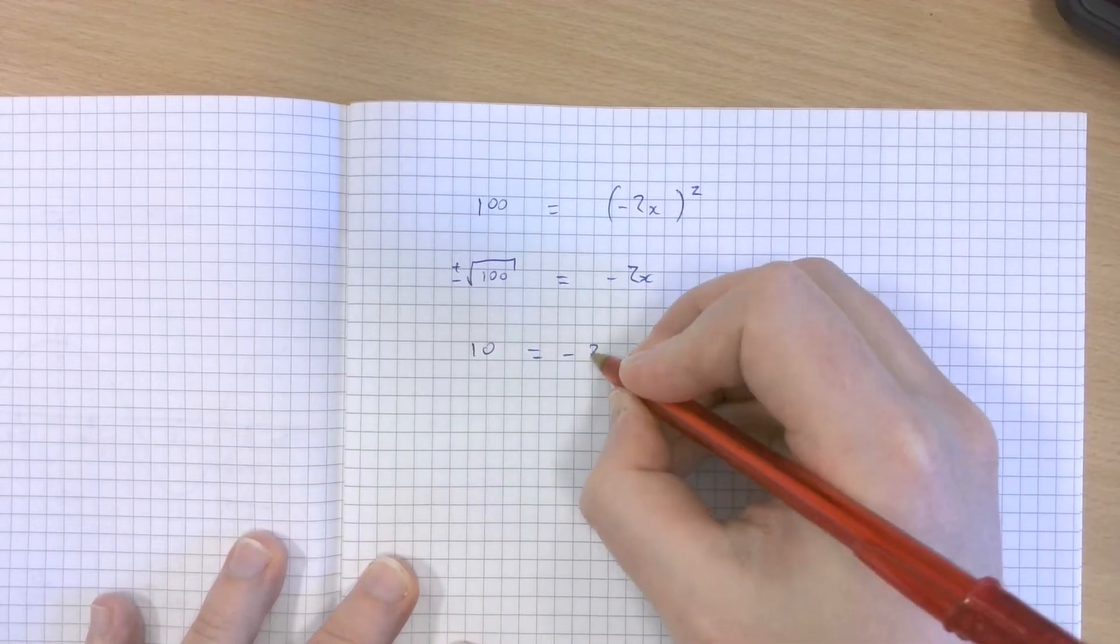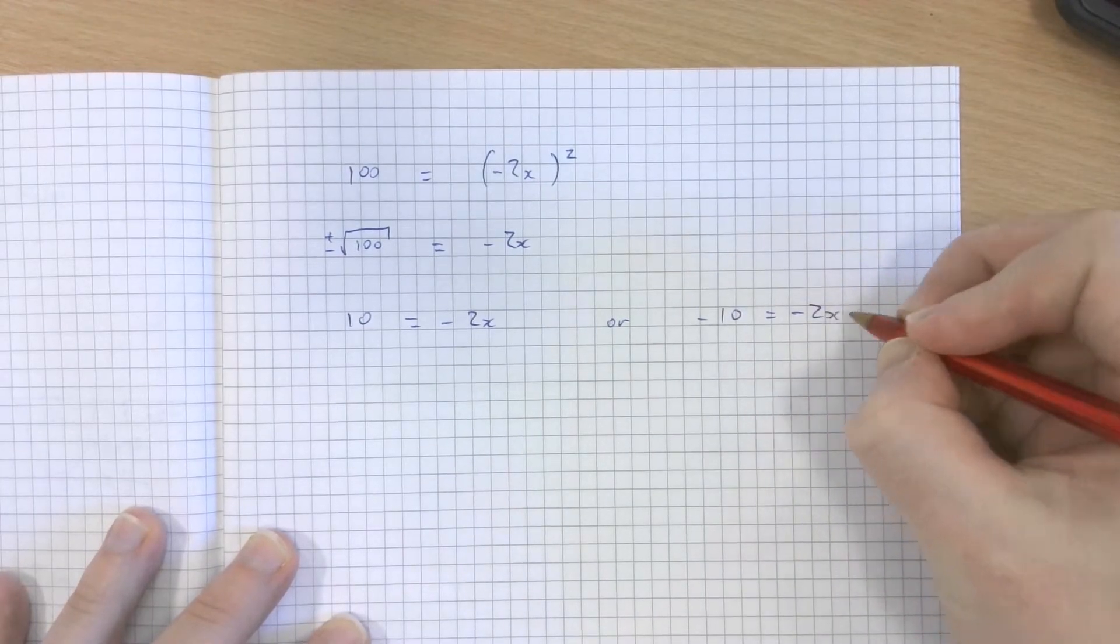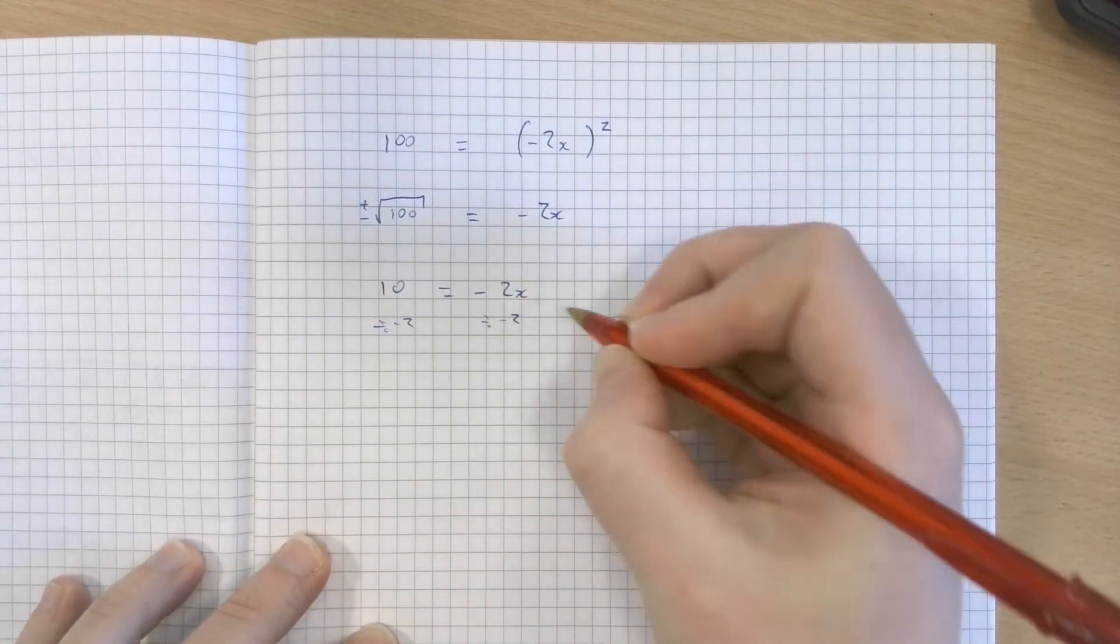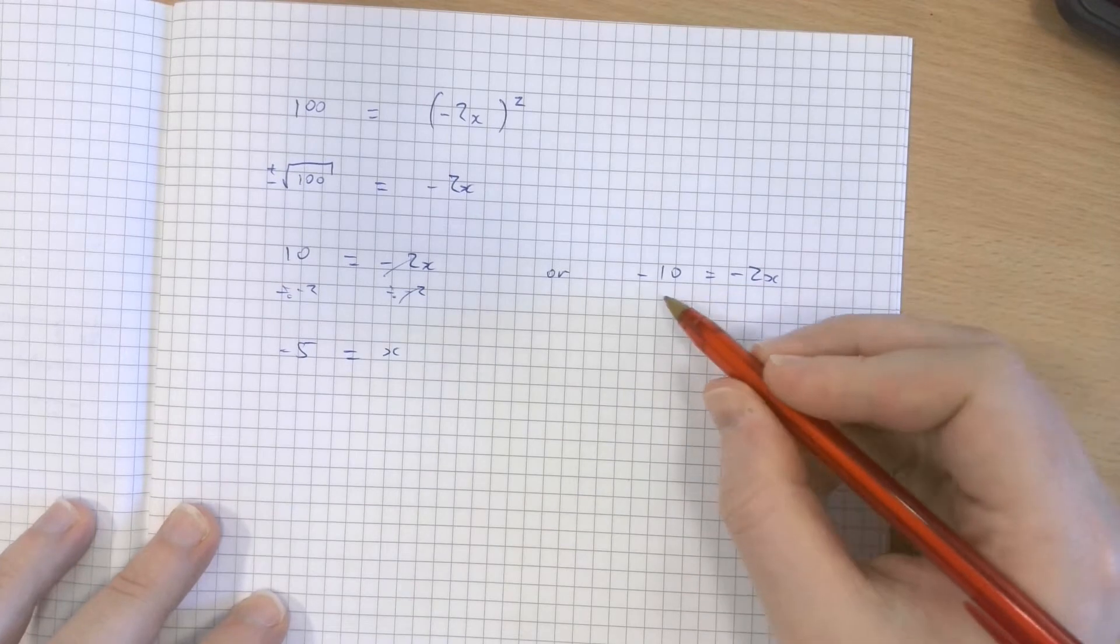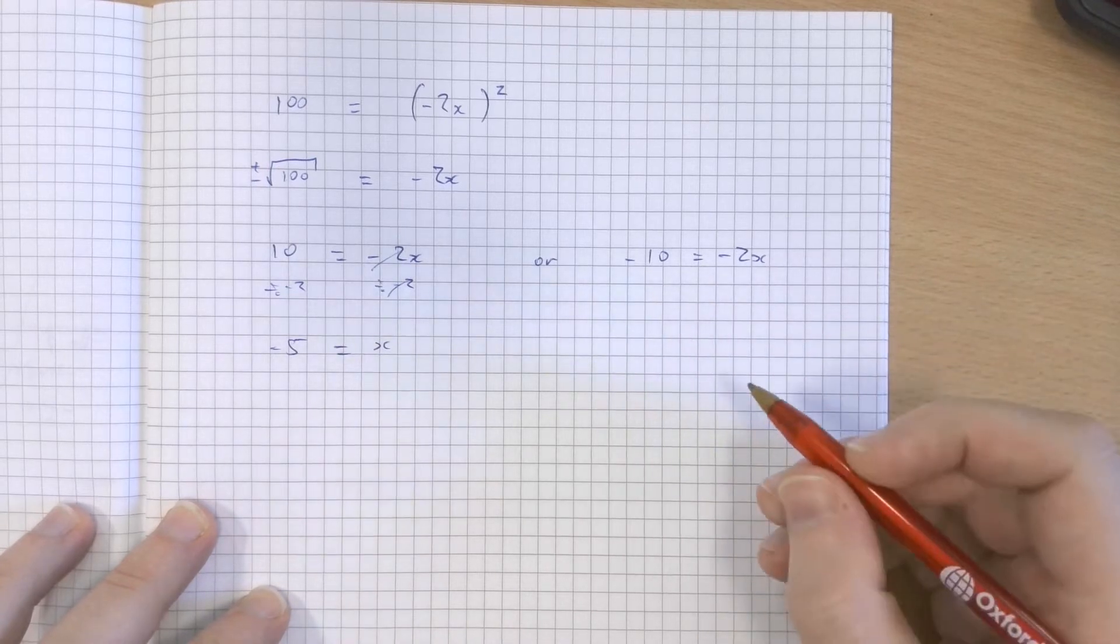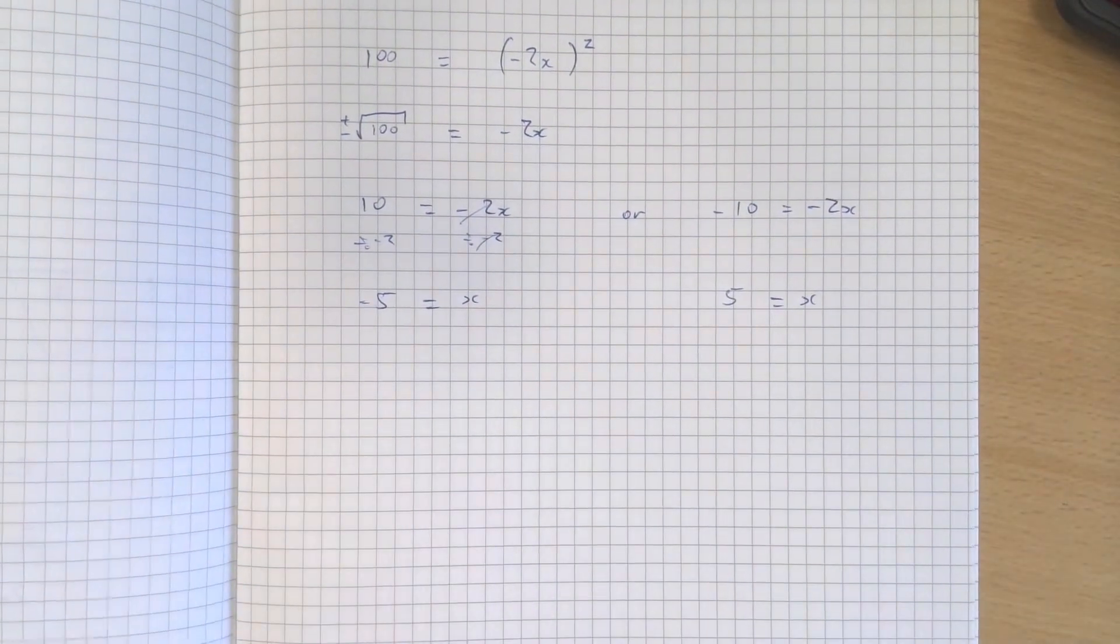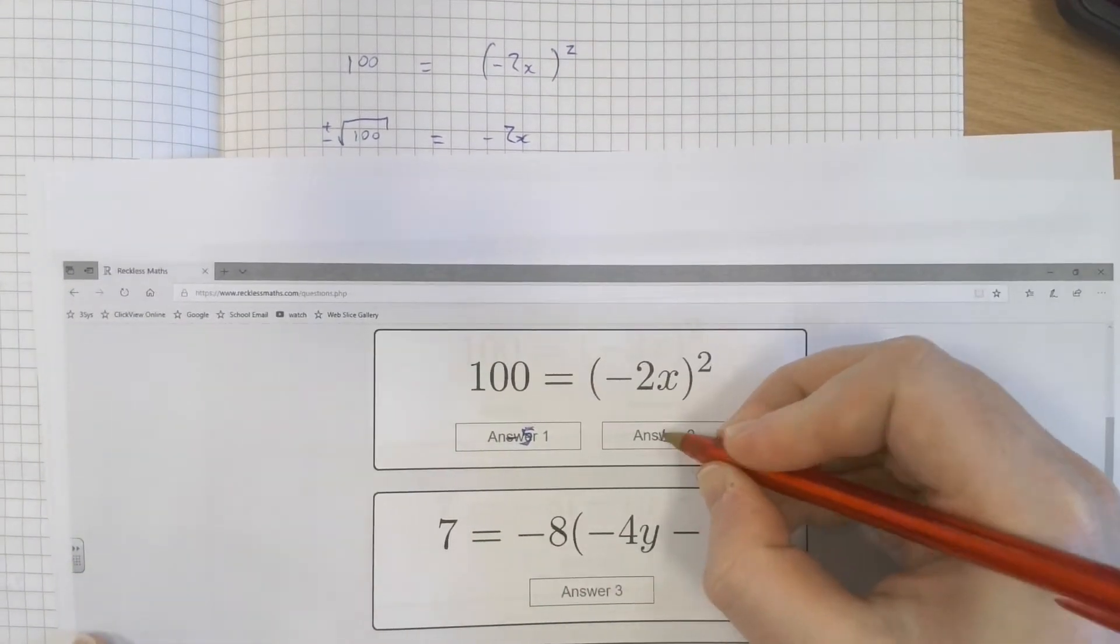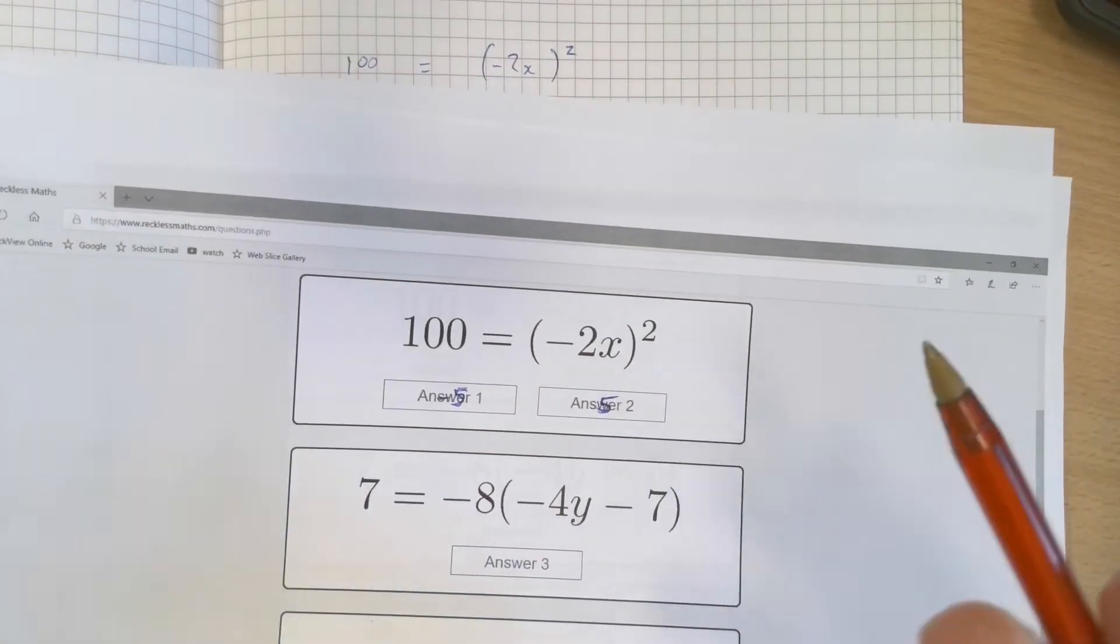So I've got two equations to solve here. Either 10 equals minus 2x or minus 10 equals minus 2x. Dividing both sides by minus 2, that cancels out and just leaves x. 10 divided by negative 2 is negative 5 equals x. But dividing both sides by negative 2 over here produces two negatives that cancel each other out, leaving 5 equaling x. So my two answers for this first question are minus 5 and 5.